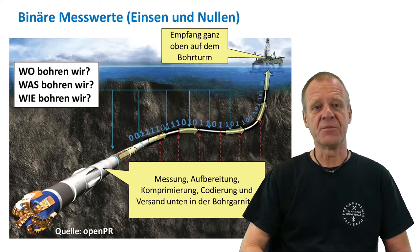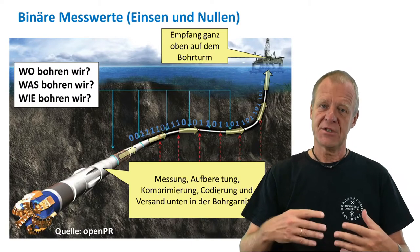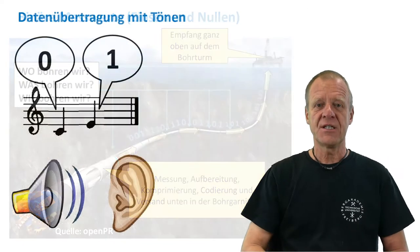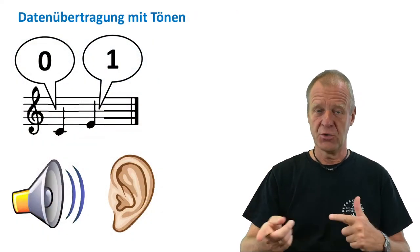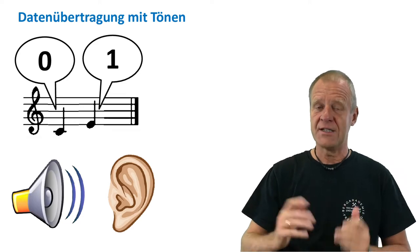One way of transferring these zeros and ones to the surface is using an on-the-ground siren that produces different tones. These tones are assigned to be either 0 or 1. For example, the low tone can represent 0 and the high tone can be 1.